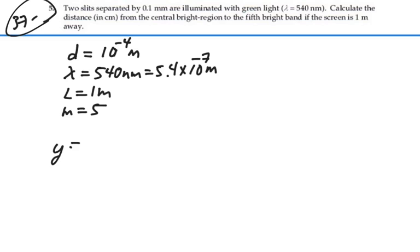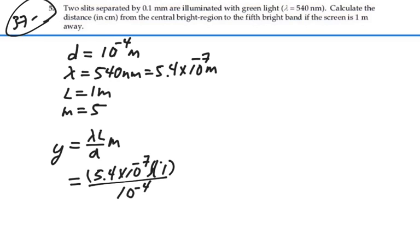And we know that y should equal lambda l over d times m. And so in this case that is going to be 5.4 times 10 to the minus 7 times l which is 1 meter away over d which is 10 to the minus 4 meters times m which is 5.